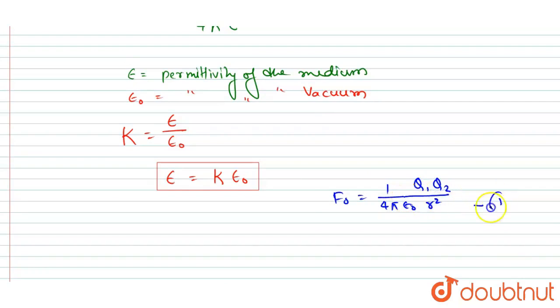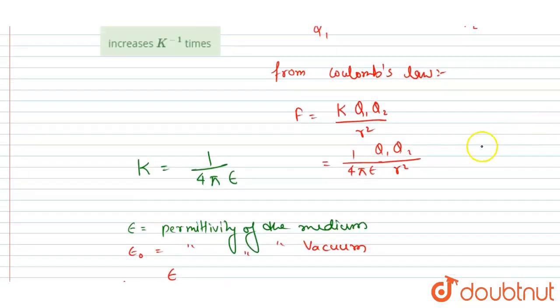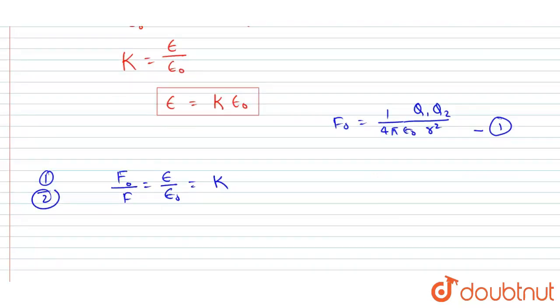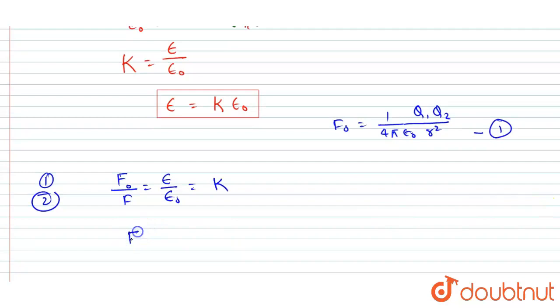Just divide the two. So I will write equation 1 by equation 2. So F naught by F is equals to, if you see, inversely proportional to the permittivity of the medium, and this is equals to the dielectric constant K. So you can see F naught by K is equals to force in that medium.